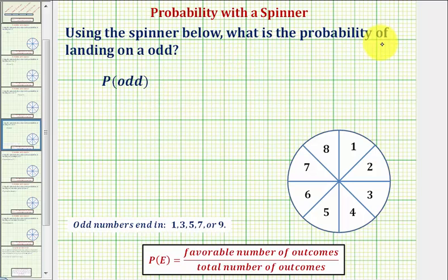Using the spinner below, what is the probability of landing on an odd? To find the probability of an event, we compare the favorable number of outcomes to the total number of outcomes.